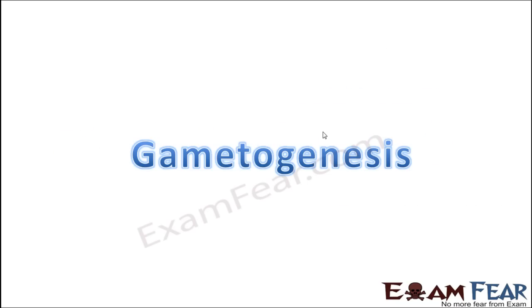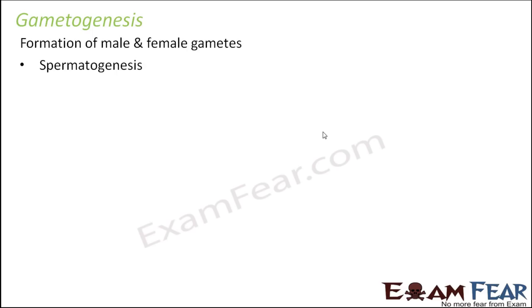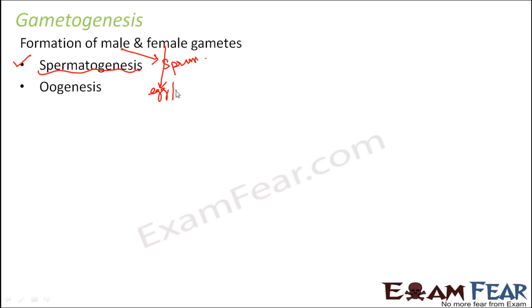We will start with gametogenesis, which is the process of gamete formation. In human beings, the male gamete is formed in the testis, specifically in the seminiferous tubules, and the female gamete — the ovum — is formed in the ovary. The process of sperm formation is known as spermatogenesis, and the process of ovum formation is called oogenesis. We will first discuss spermatogenesis and then oogenesis.